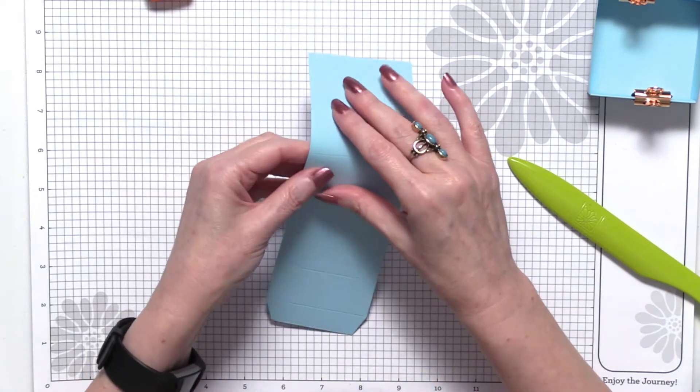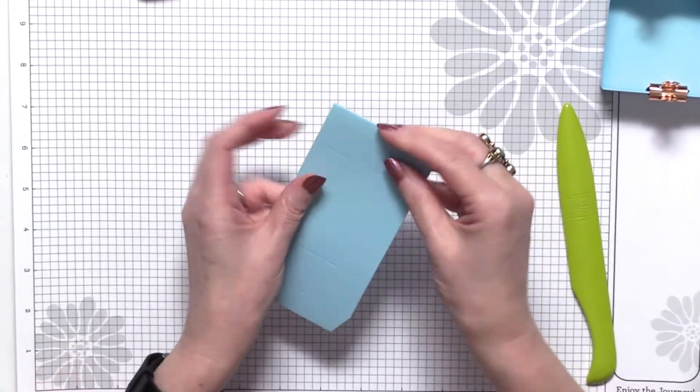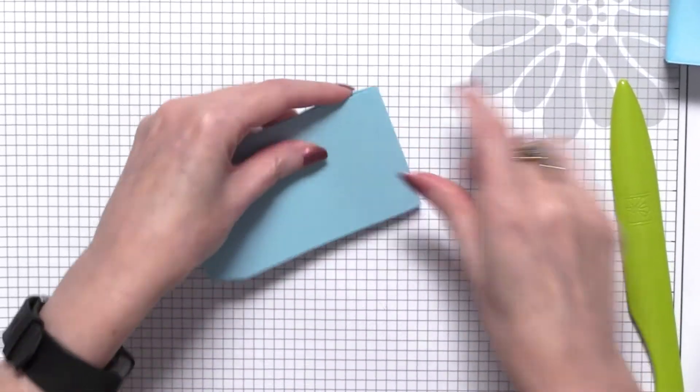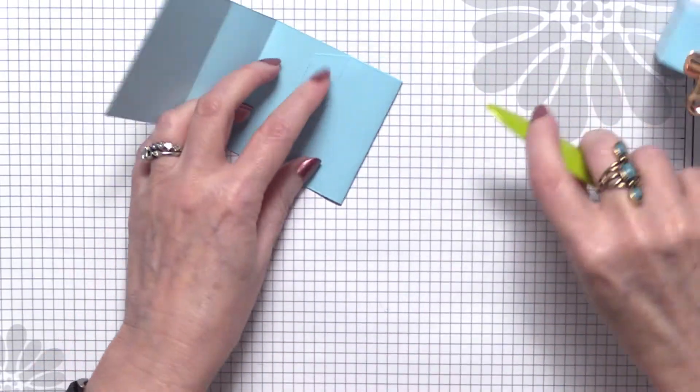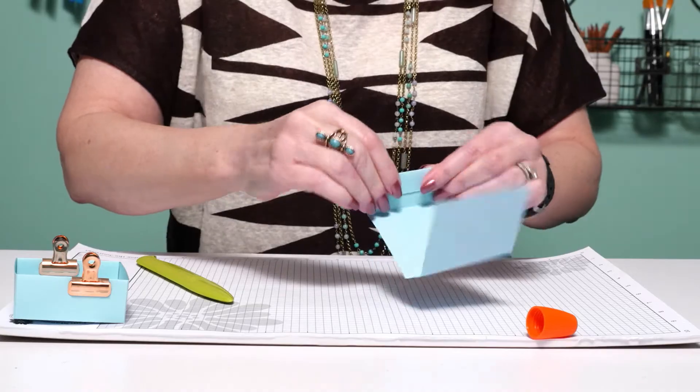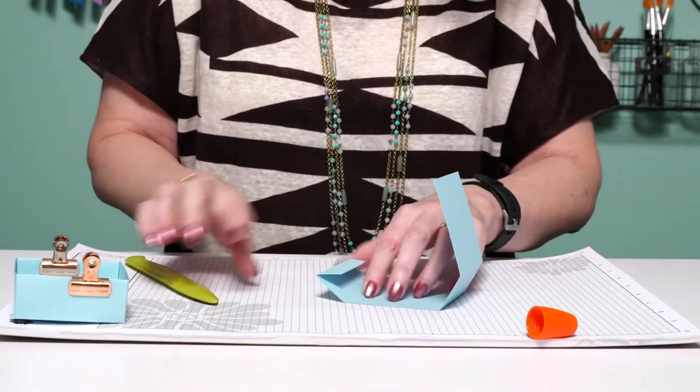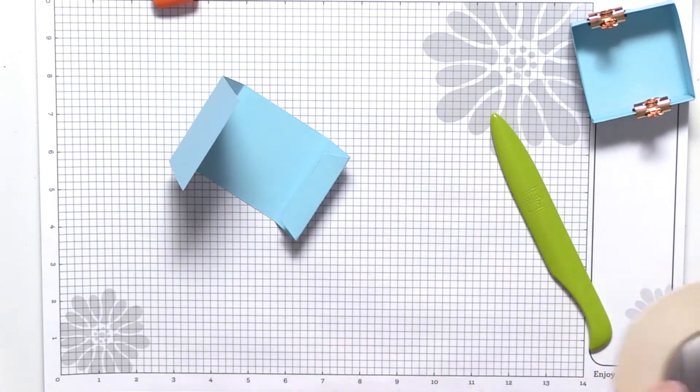Now, this is the band, and there's just a couple of scored lines. And we have one adhesive tab. Now, for this band, you can actually use the white liner tape. I've had no problem with that.